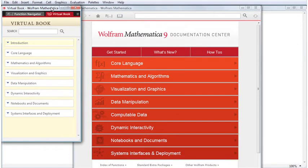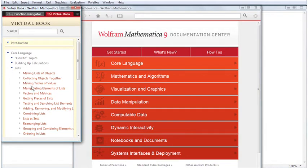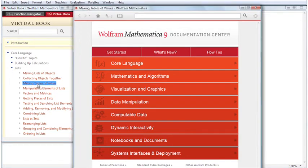The tutorials in the Virtual Book are grouped together by functionality. For instance, if you'd like to learn about lists, open the Core Language section, and then the Lists subsection. Clicking on a subject that interests you will take you to the corresponding tutorial.